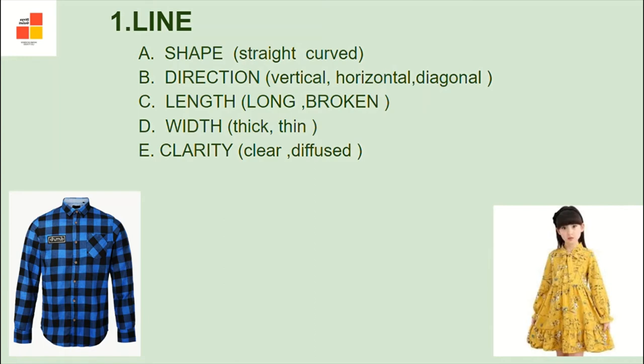Next, we talk about the directions of lines. A vertical line adds height to the body and makes it appear cylindrical. A horizontal line emphasizes width and makes the figure appear shorter. Diagonal lines may have a cylindrical or broadening effect depending on the angle of slant. They are usually found on necklines. Broken lines shorten the length of long straight lines and make the person appear fatter.